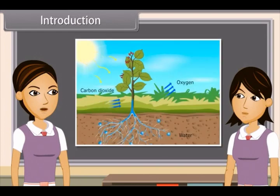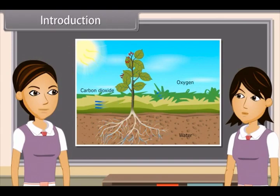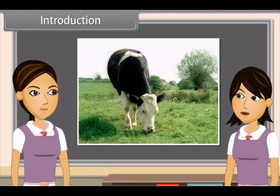Plants use the energy of the sun and prepare food by photosynthesis, which is utilized by them to maintain their life. In turn, these plants are also eaten up by herbivores and omnivores as food. And the carnivores eat herbivores as their food. In this way, it is energy from the sun which provides food for plants and animals.